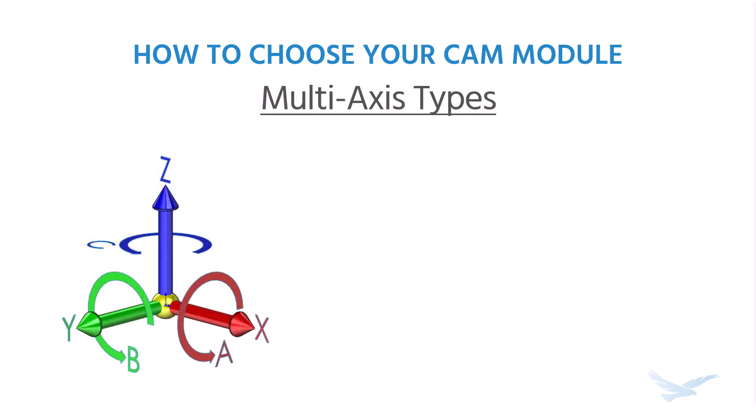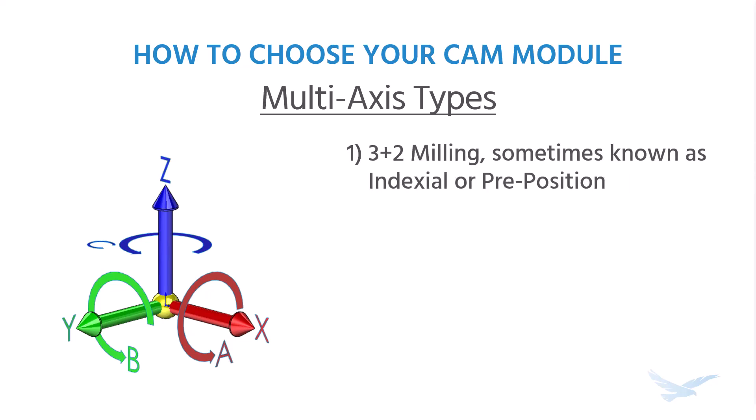There are actually two main types that multi-axis functionality can be reduced to. The first is what we call 3 plus 2, sometimes known as indexial or preposition. That's referring to movement in the X, the Y, and the Z direction — that would be your 3. The plus 2 is the rotate and tilt angles, which on most machines could be a rotation around the X, a rotation around the Y, or a rotation around the Z, otherwise known as the A, the B, and the C axes.